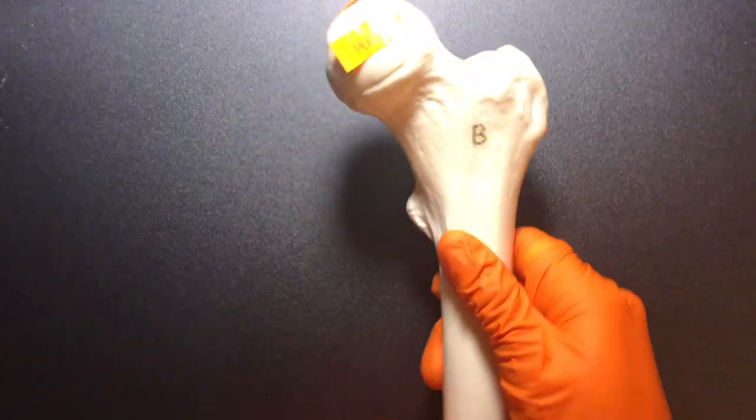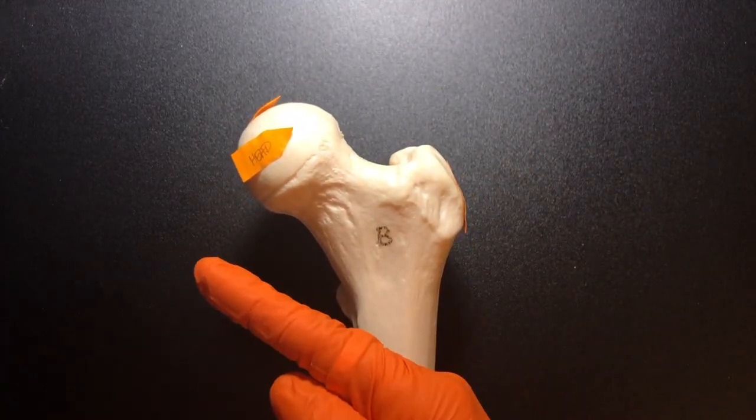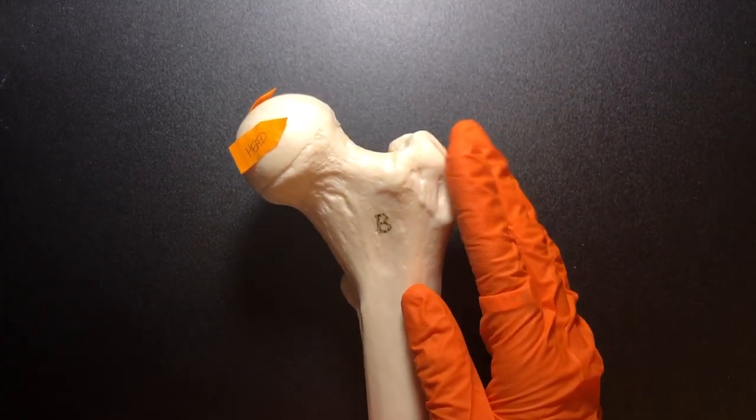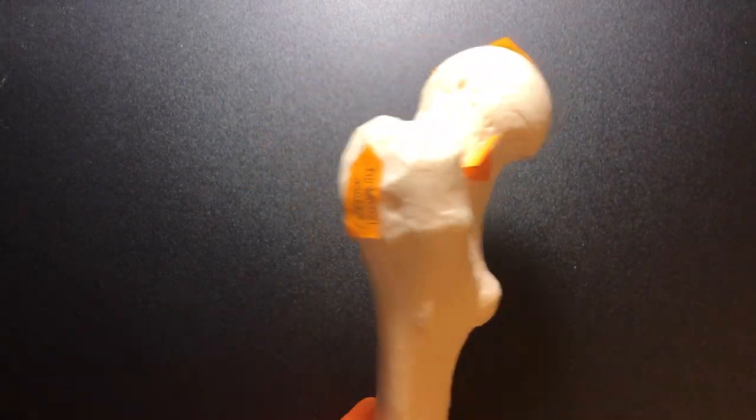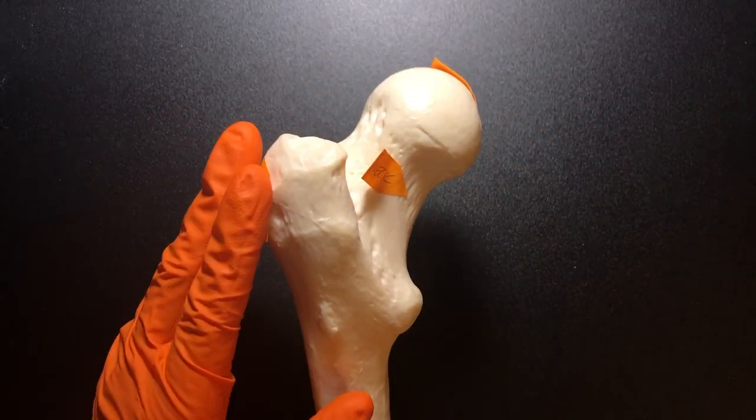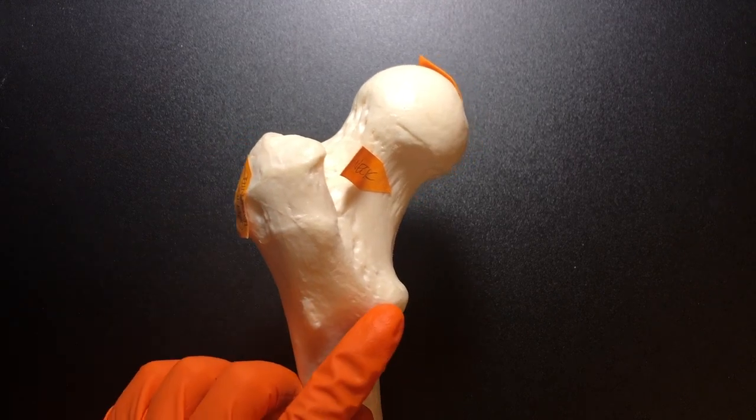So that head is going to go medially. Then we have two trochanters. We have the greater trochanter. So if I were to flip this around, we have the greater trochanter and the lesser trochanter.